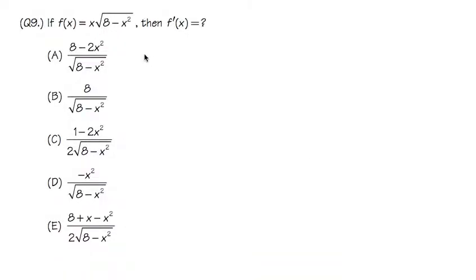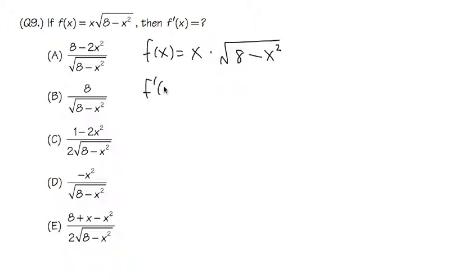Our function for question number nine is f of x equals x times the square root of 8 minus x squared. To take the derivative of this, we are going to use the Product Rule, because here we have x times the square root. The Product Rule says we keep the first function, which is x, multiplied by the derivative of the second.